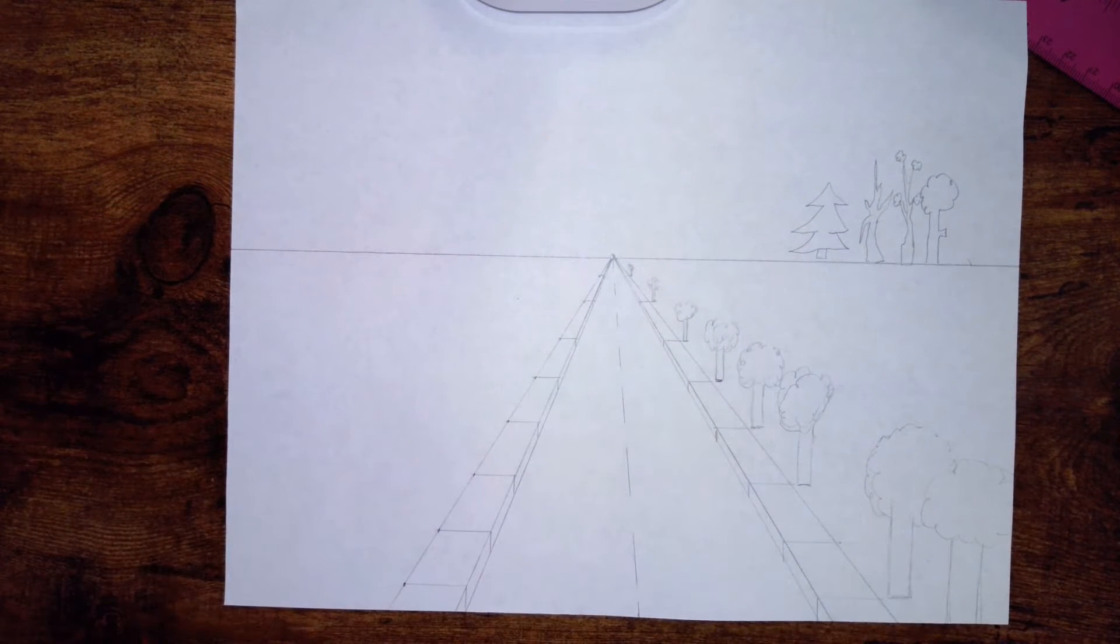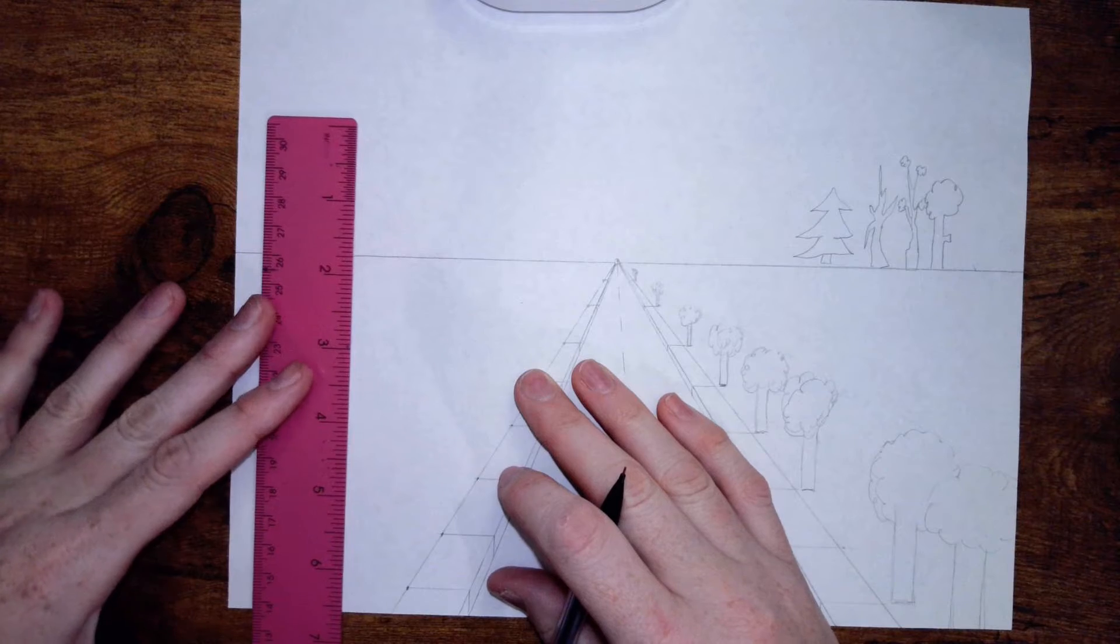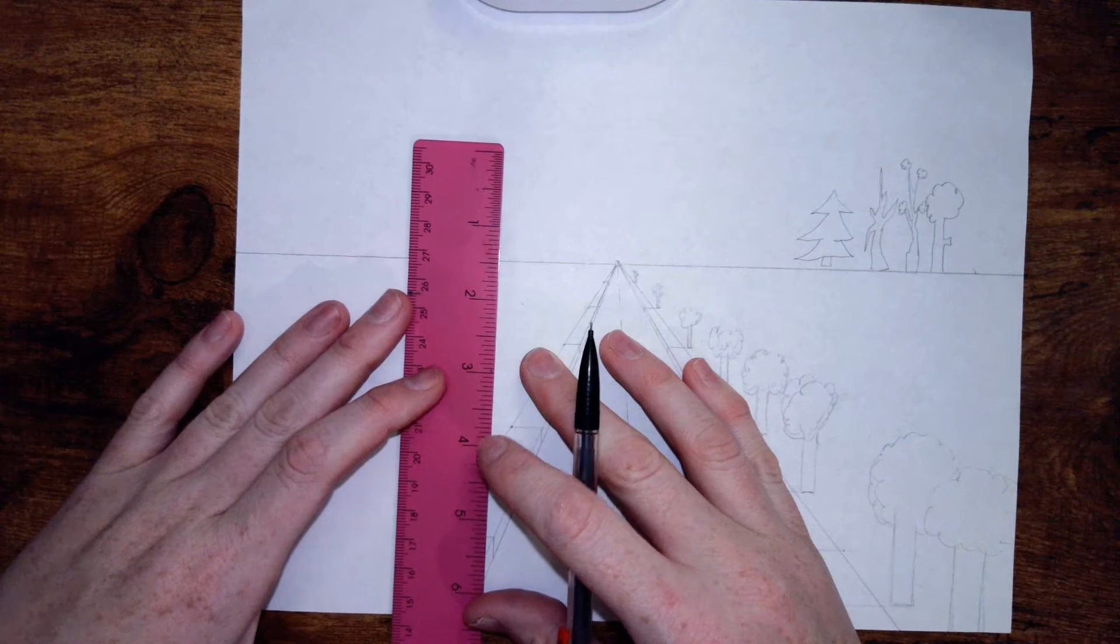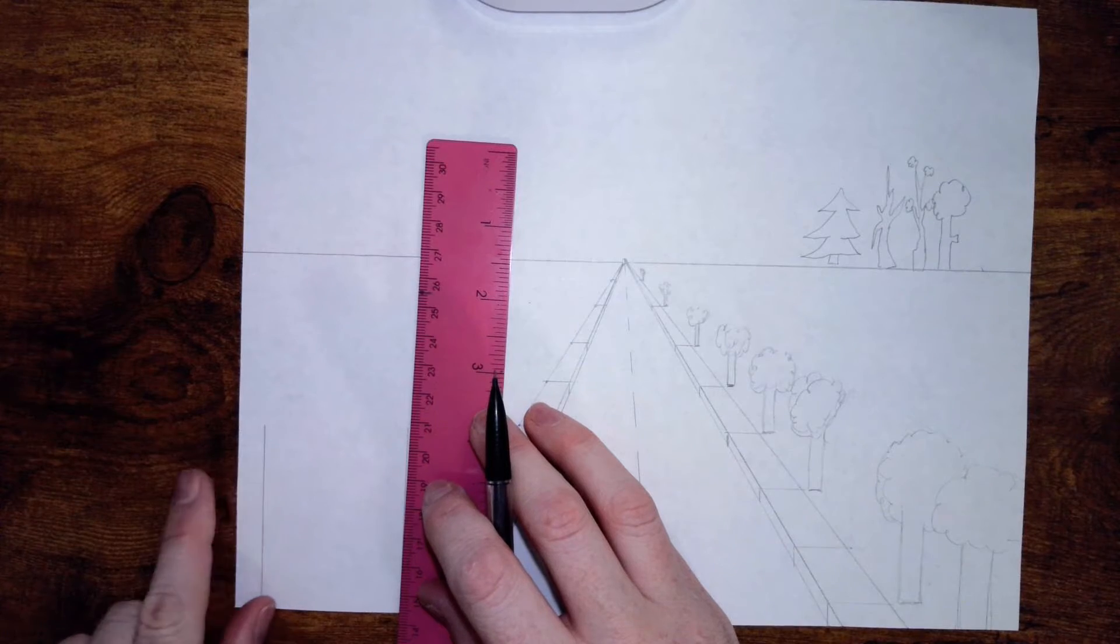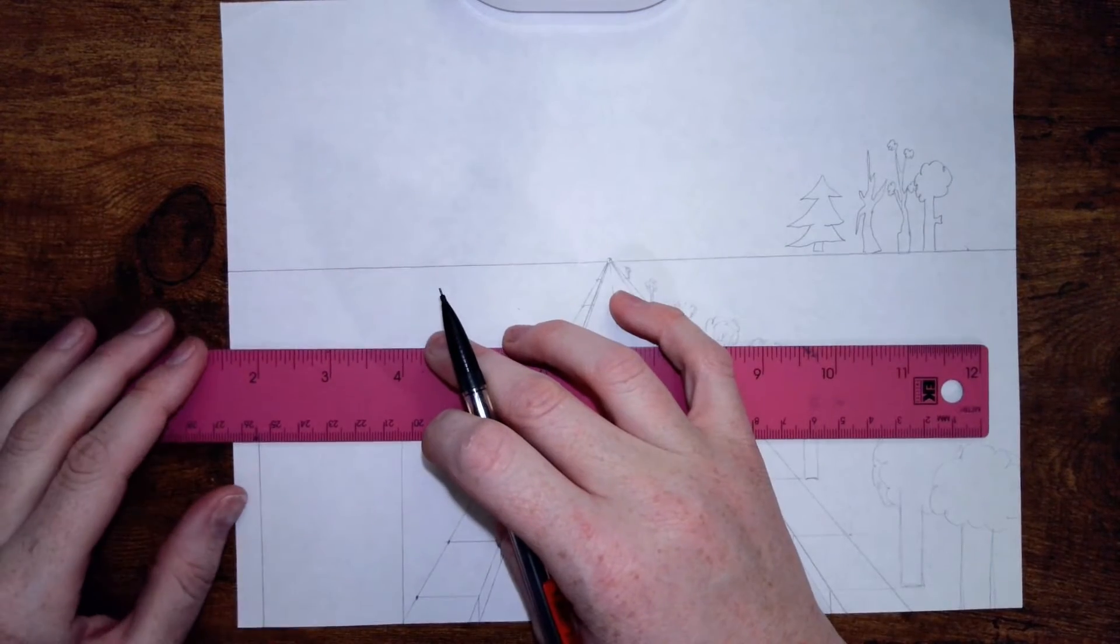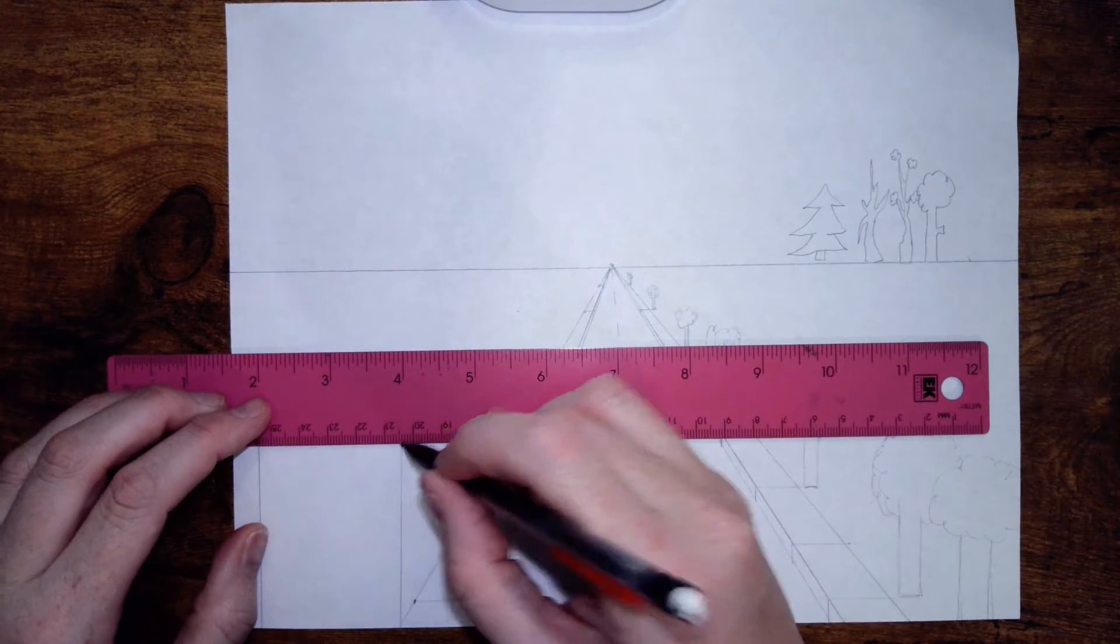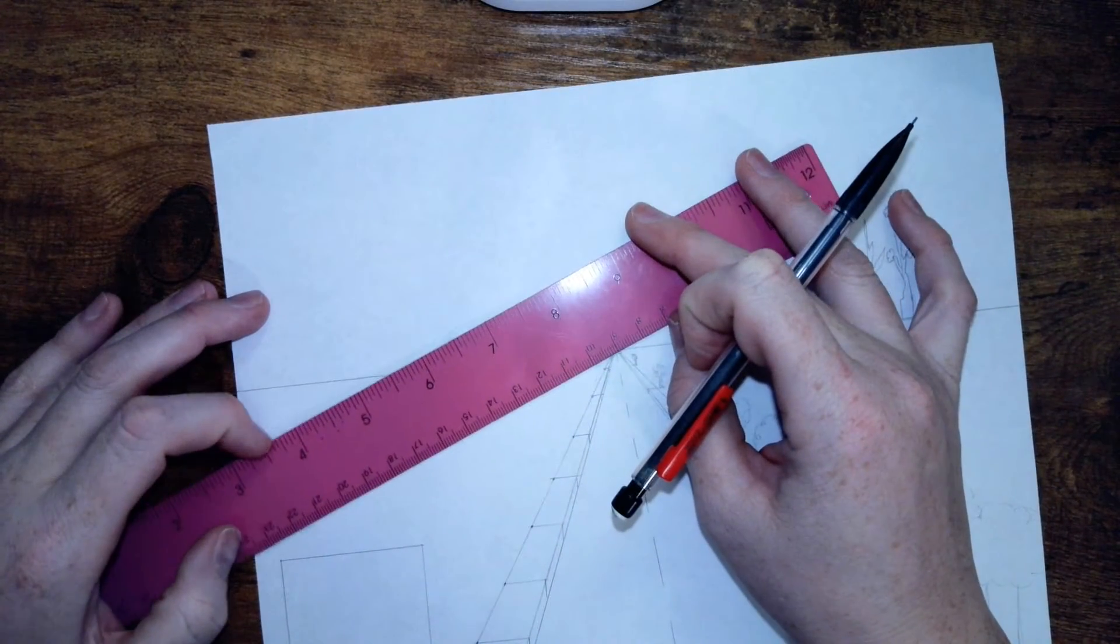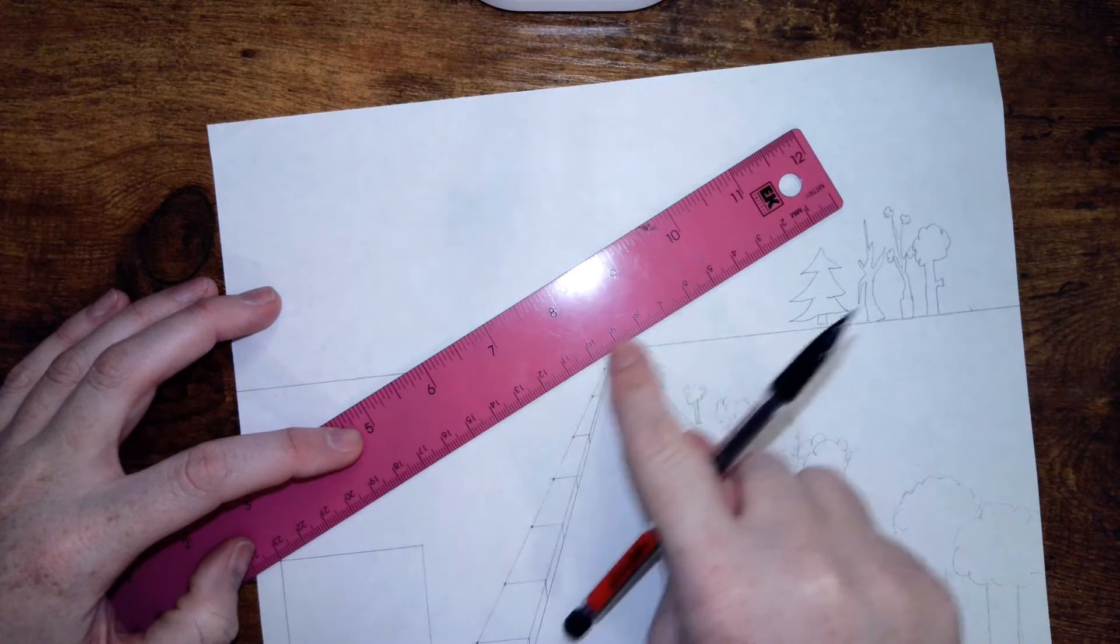All right, we already have our drawing set up. Now we're going to add overlapping buildings with an alleyway. So I'm going to create a building, making sure it's parallel with the side of my paper. The top should be parallel to my horizon line. Now I'm going to line up to my vanishing point.